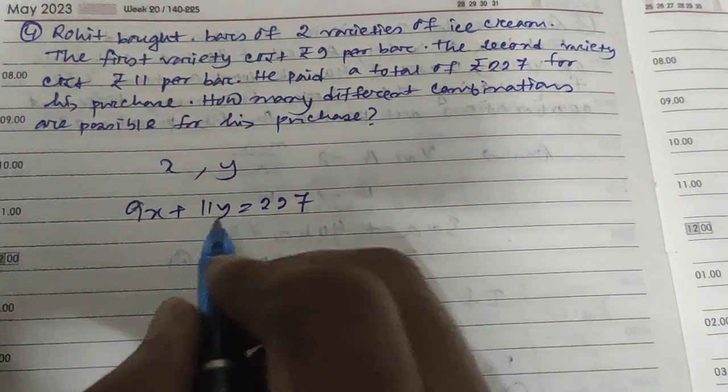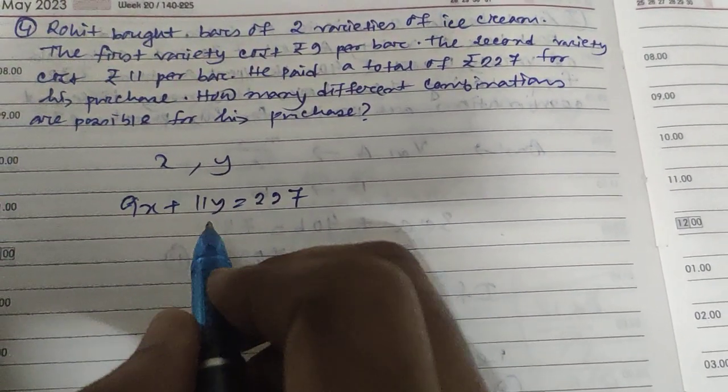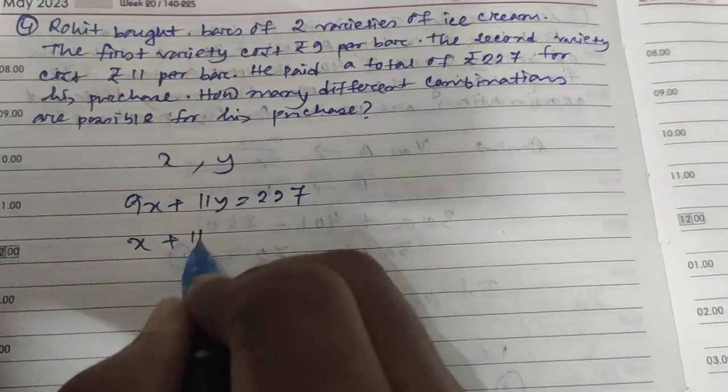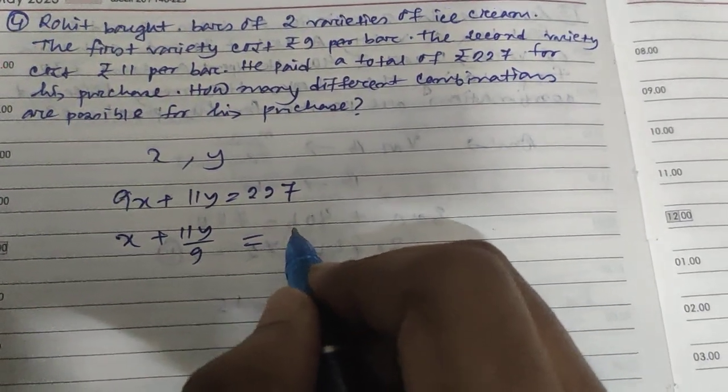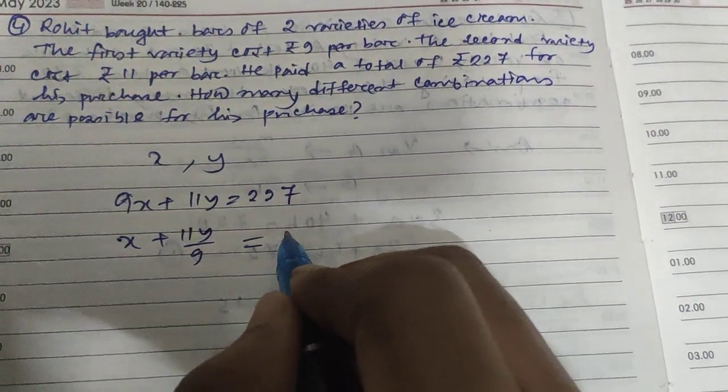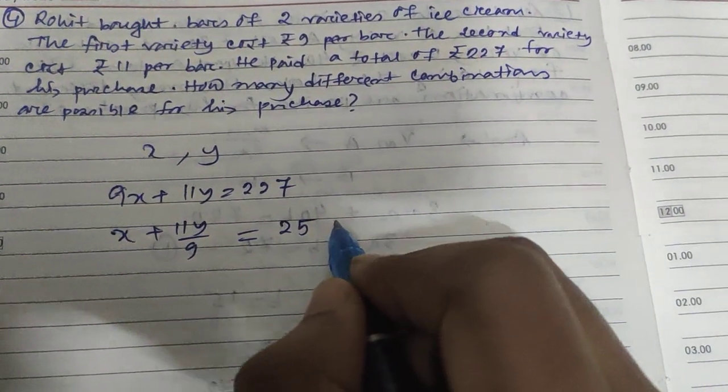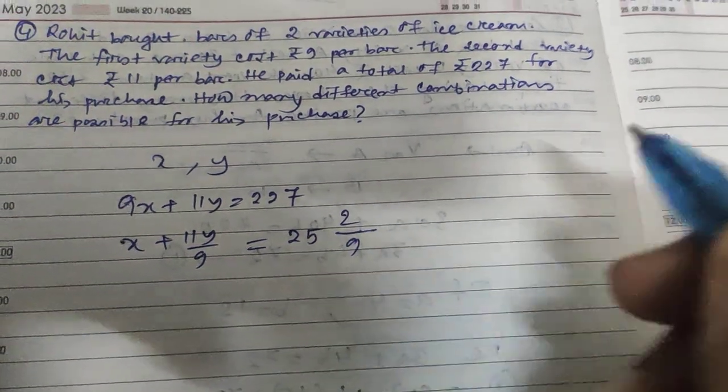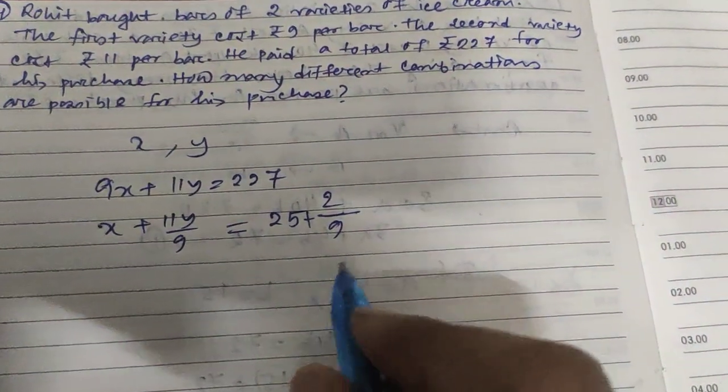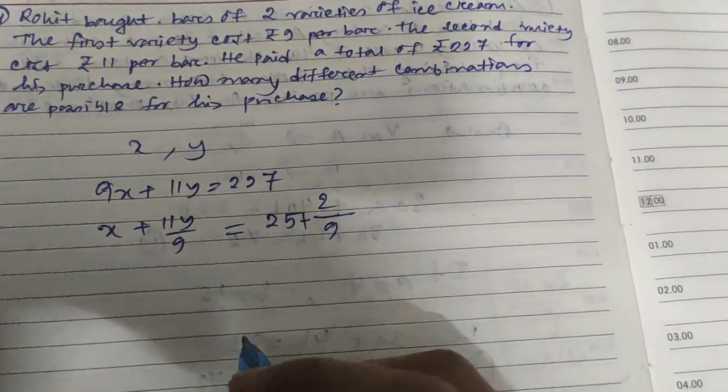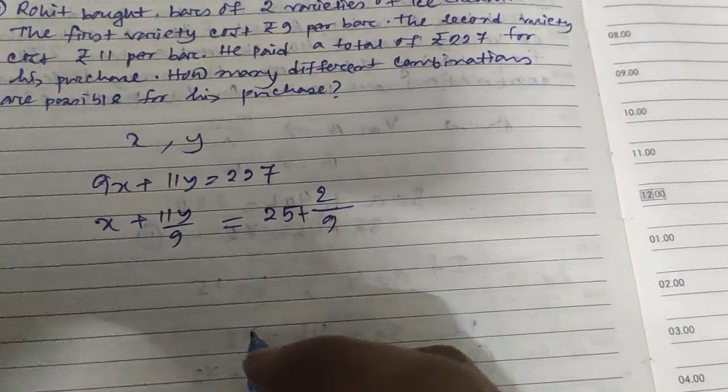So we are now dividing both sides by 9. So X plus 11Y divided by 9, this is how much? This is basically 25. So you can write down this 25 plus 2 by 9, right?